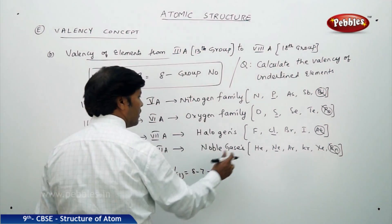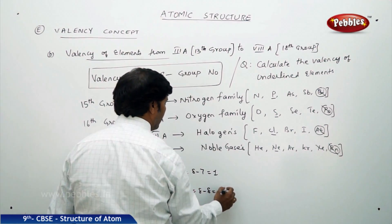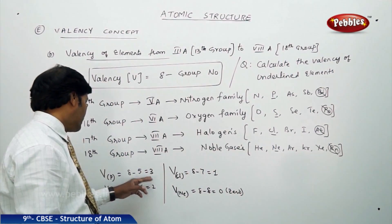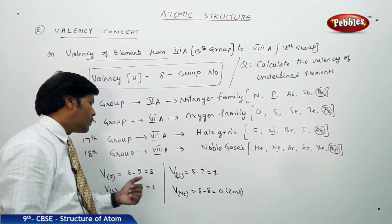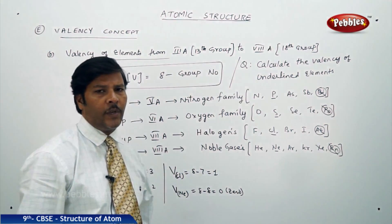Which is equal to 1. Valency of neon is equal to 8 minus 8, which is equal to 0. Therefore, the valency of phosphorus is 3, valency of sulphur is 2, valency of chlorine is 1, valency of neon is 0 respectively.